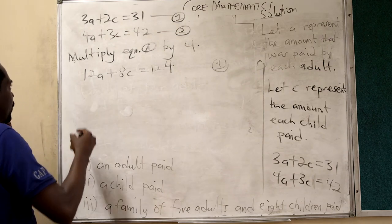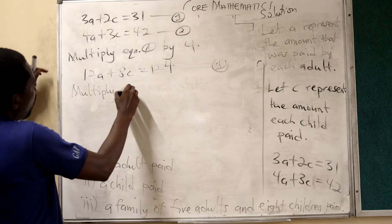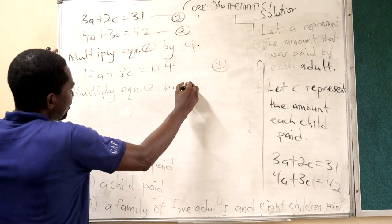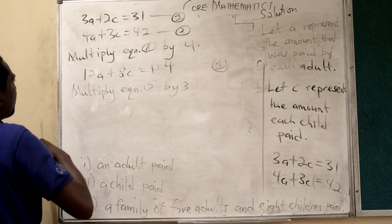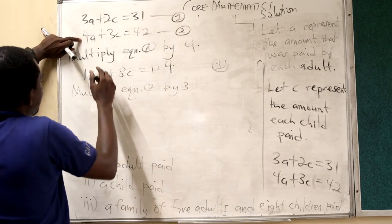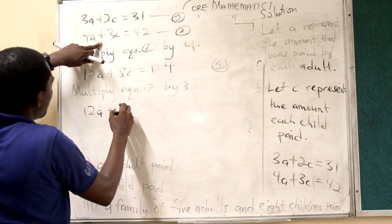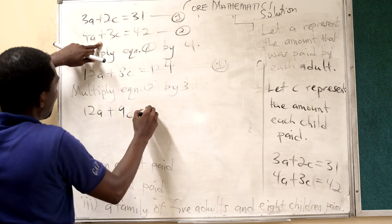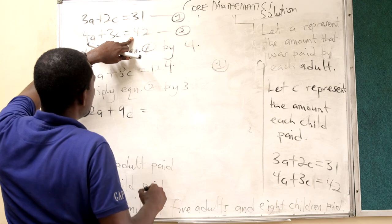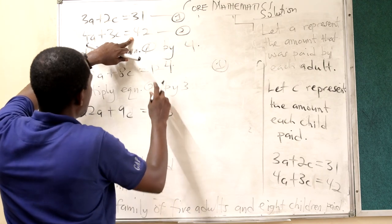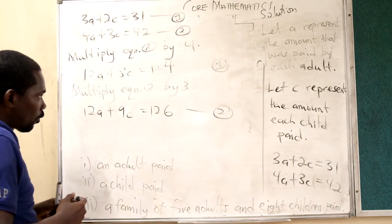Now, let me multiply equation 2 by 3. Then, by multiplying equation 2 by 3, I am going to have 4A multiplying 3. That is 12A. Then, 3C multiplying 3. It is going to be 9C. 42 times 3 is 126. So, this is my new equation 2.